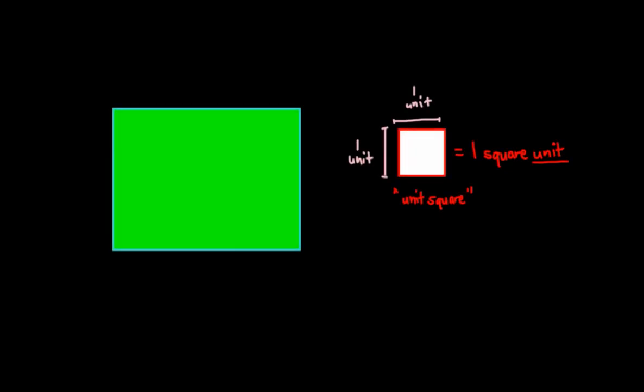Welcome back mathematicians. In continuing our discussion about area, we just want to build upon our knowledge that we learned from the previous video. We learned that a square that has a side length of one is called a unit square, and that unit square has an area of one square unit.